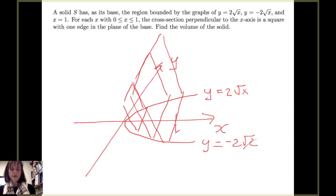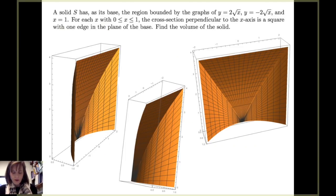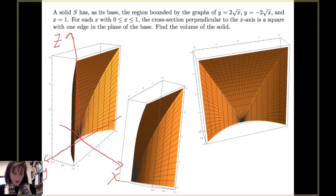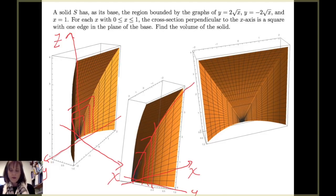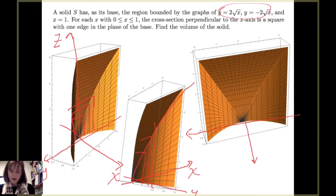We can also consider three-dimensional pictures of the solid. In the first picture, the y-axis is on the back side and the z-axis is shown — you can see the square cross-sections. From another perspective in the second picture, the x-axis and y-axis are labeled, and you can see the square cross-sections as well as how the corners of those squares take the parabolic shape from y equals 2 times the square root of x and y equals negative 2 times the square root of x. In the third image, we're looking straight in from the x-axis perspective, and again you can see the square cross-sections.